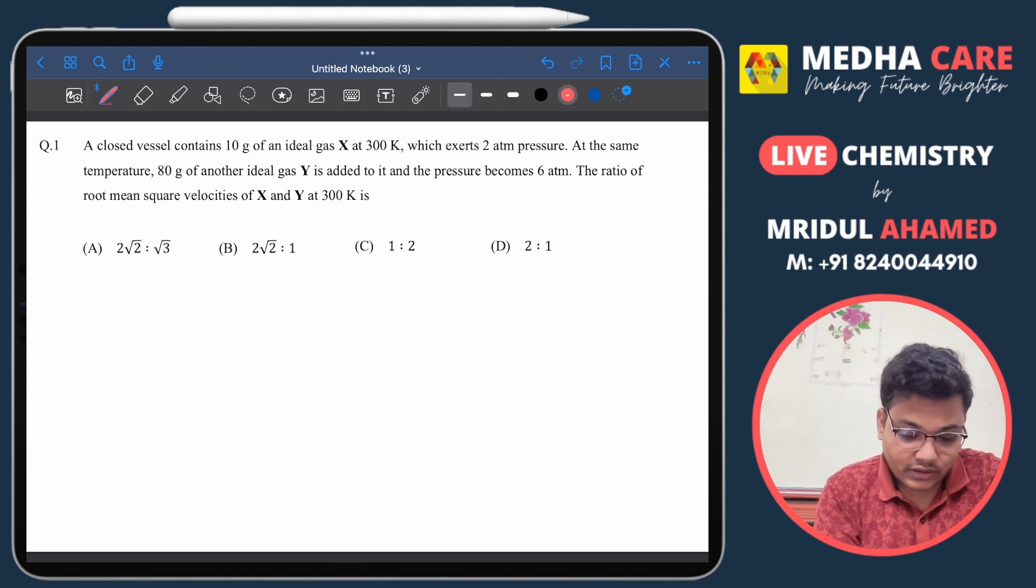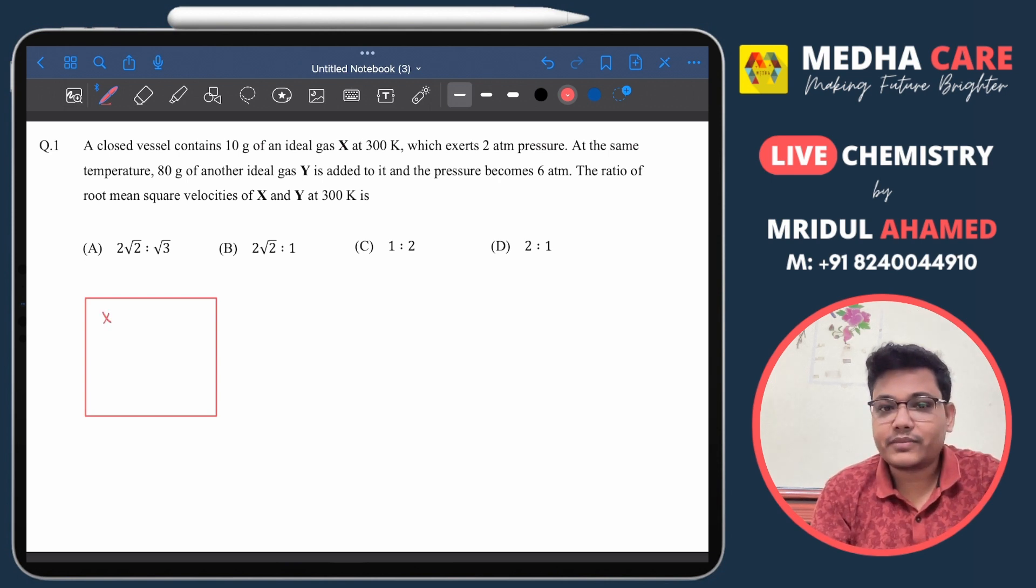See, in a closed vessel, consider this one is the closed vessel. So in this closed vessel we have the gas X, and the gas X is exerting pressure 2 atm. That means the partial pressure of X is 2 atm.